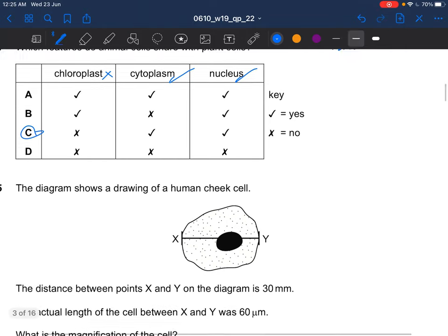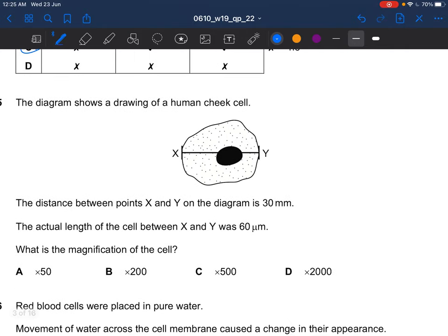Next question, the diagram shows a drawing of a human cheek cell. The distance between points X and Y on the diagram is 30 mm. The actual length of the cell between X and Y was 60 micrometers. What is the magnification of the cell? The formula is magnification equals image length over actual length. The image length is 30 mm which is 0.03 meters. Then 60 micrometers is equivalent to 60 times 10 to the power of negative 6. So the answer would be 500.